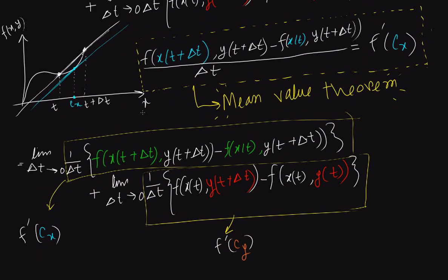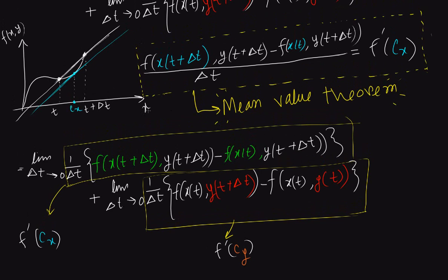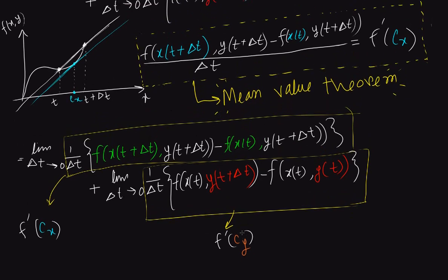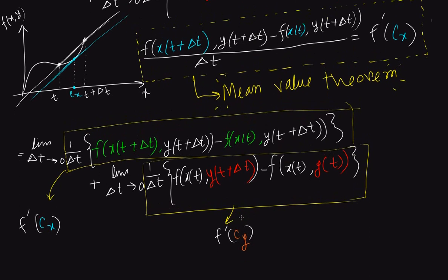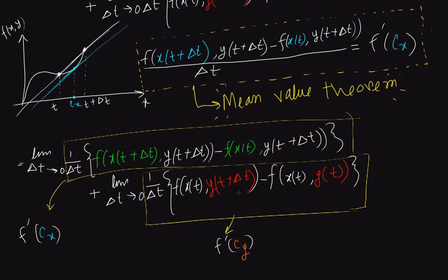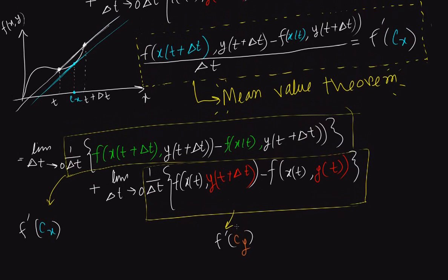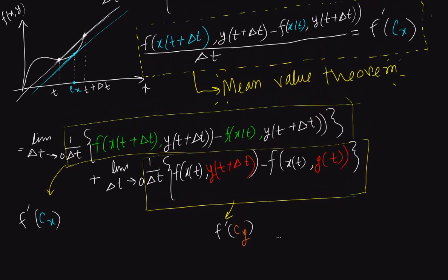If we examine the line y instead of x, there will be another point cy that will give us the slope that corresponds to the y line, and we can replace this expression by f prime cy.